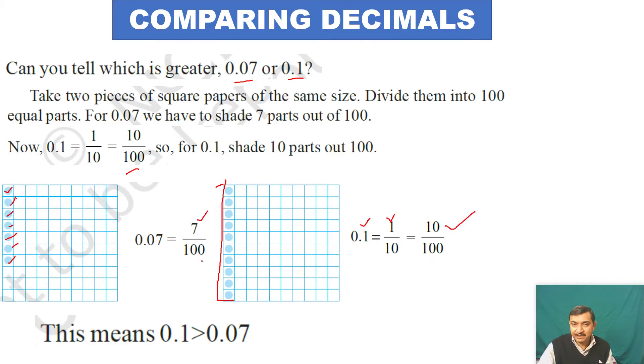Now compare. Both have denominator 100, so which numerator is greater: 7 or 10? Ten is greater. In decimal form, 10/100 is 0.1 and 7/100 is 0.07. Therefore, 0.1 is greater than 0.07.